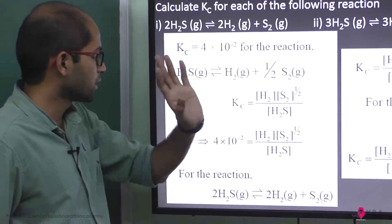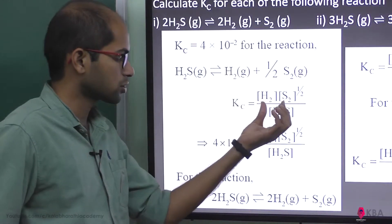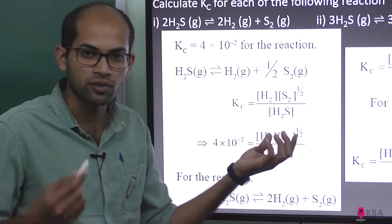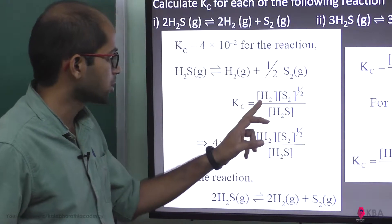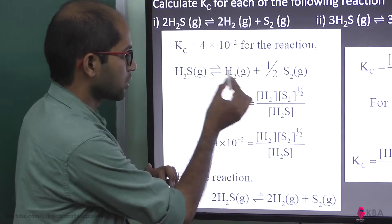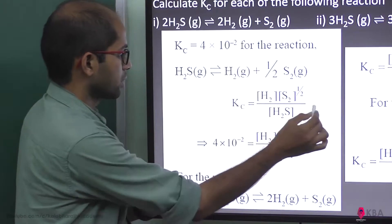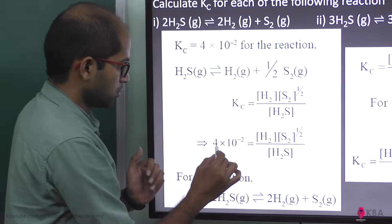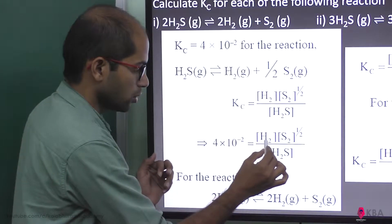Kc is the concentration of products raised to the power of their stoichiometric coefficients divided by the concentration of reactants raised to their stoichiometric coefficients. So Kc equals [H₂]¹ × [S₂]^(1/2) divided by [H₂S]¹, and the Kc value is 4 into 10 to the power minus 2.